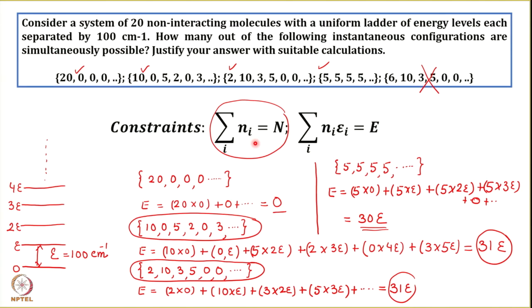Remember that whenever you need to find out which different instantaneous configurations are simultaneously possible, you need to follow these two constraints. There are several possible instantaneous configurations, but the system is most likely going to be found in the instantaneous configuration which has maximum weight. In this problem we have only talked about which configurations are simultaneously possible; you can always calculate the weight to find the most probable configuration.